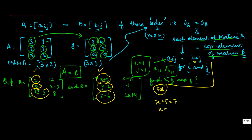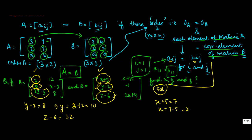So X plus 5 equals 7, which gives X equals 7 minus 5, or X equals 2. Similarly, Y minus 2 equals 8, which implies Y equals 10. Then Z minus 6 equals 2Z minus 3. Transposing, 2Z minus Z equals minus 6 plus 3, so Z equals minus 3.